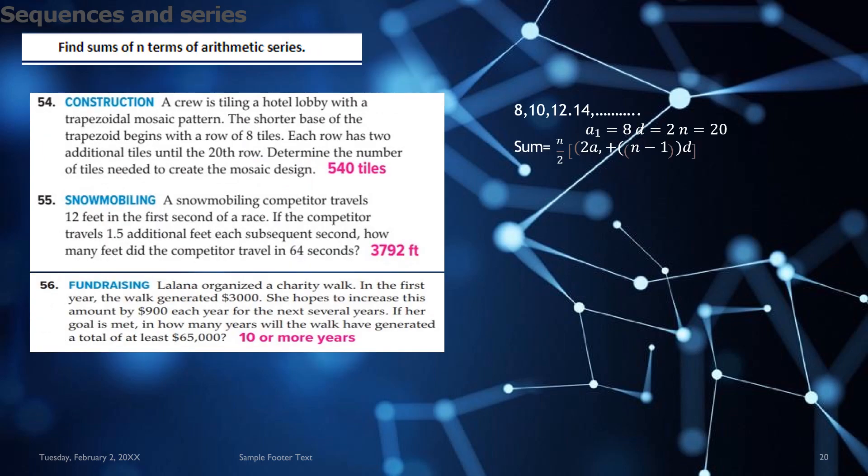Then you have 54 to 56 where there are word problems. The solutions are given in pink again and you have to find sum of n terms of the arithmetic sequence and series for this question. So the formula that is being used, I have written it here is sum equal to n divided by 2 multiplied by 2a plus n minus 1d where your a1, d and n will be given in the question.